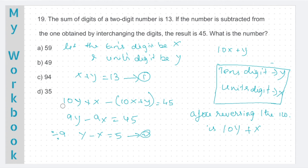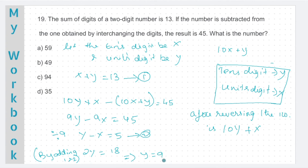We just have to solve for X and Y now. X plus Y is 13 and Y minus X is 5. If we add both equations 1 and 2, X will get eliminated and 2Y will be 13 plus 5, which is 18. 2Y is 18, which implies Y will be 9. If Y is 9, X will be 13 minus 9, that is 4. So the number will be 49, since X is our 10s digit and Y is our units digit. Option B, 49, is the answer.